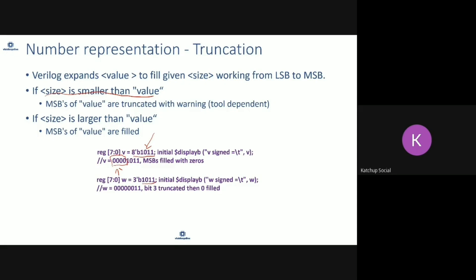For example, if you have the 3-bit number 101 but you declare it as a 7-bit number, only three bits are used. The upper bit — the fourth bit — is ignored, so your number becomes 011. When assigned to an 8-bit number (seven down to zero), it will be extended with zeros, or with the sign bit if it is a signed number — we'll cover that a bit later.